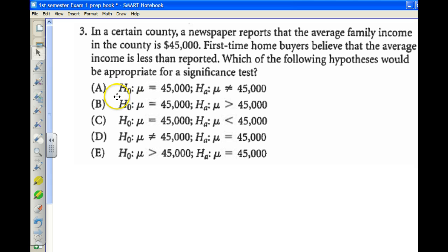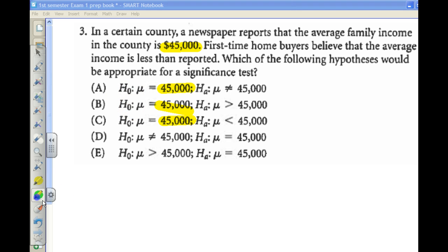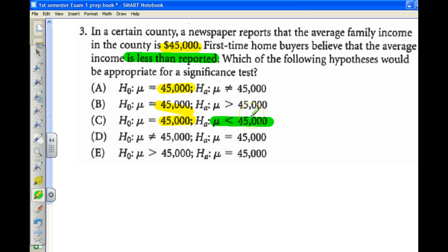We've studied some null hypothesis problems. In a certain county, a newspaper reports the average family income is $45,000. First-time homebuyers believe the average income is less than reported. So $45,000 is our mean. This is about a mean instead of a p-value, but it's the same idea. One of these would be our null hypothesis, and then the alternate hypothesis would be less than, since the problem says less than reported.